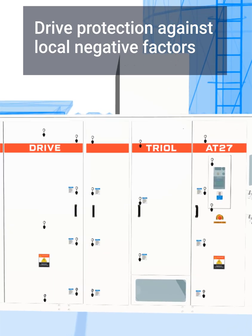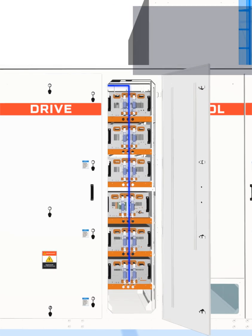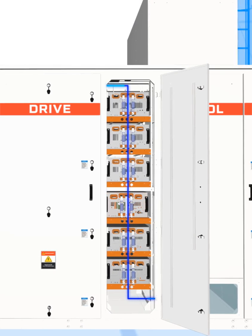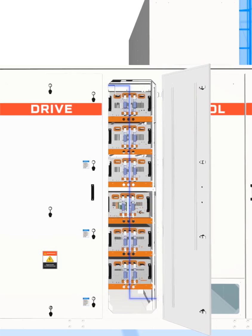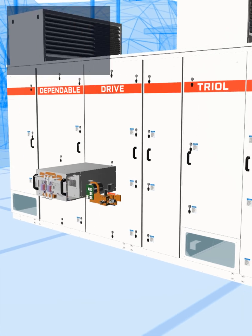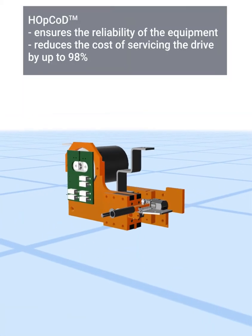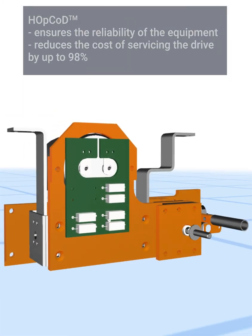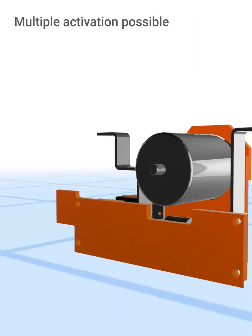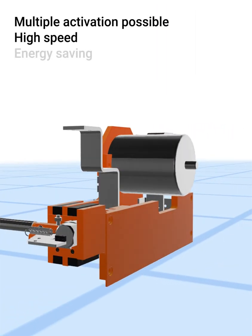Failure of the TRIOL AT27 variable frequency drive power cell elements for various force majeure reasons will not stop the operation of your equipment. The HopCod high-speed switching device provides equipment reliability and reduces the cost of maintenance by up to 98%. Unlike similar solutions from competitors,